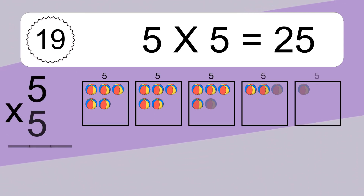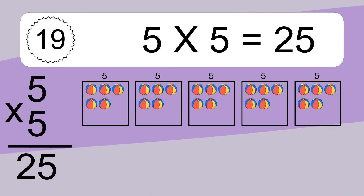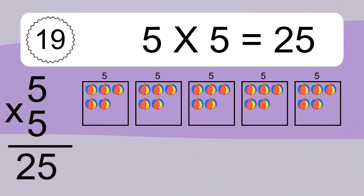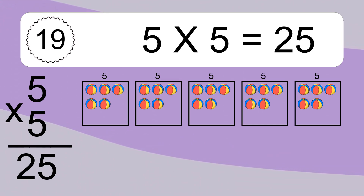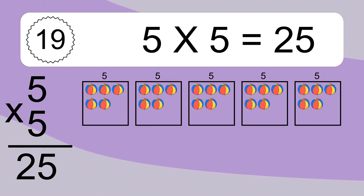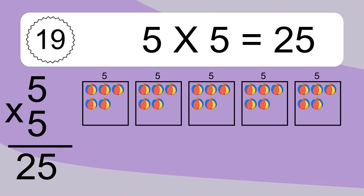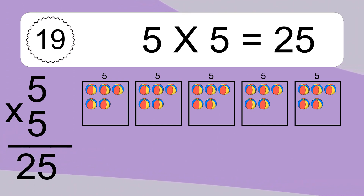5 times 5 equals what? 5 times 5 equals 25. We have 5 boxes and each box has 5 colorful balls inside. If you count all the balls in all the boxes together, you will have 5 times 5 balls. This equals 25 balls.